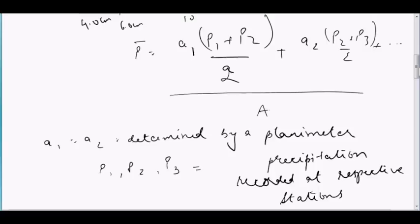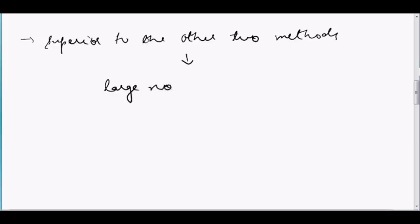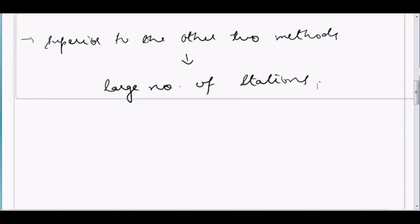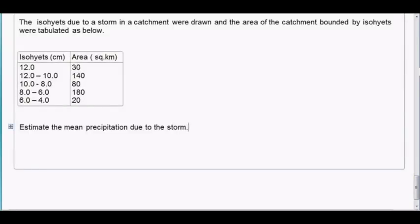This isohytal method is superior to the other two methods when you have a large number of stations. So now we will solve a numerical and see how we can determine the mean precipitation using the isohytal method.